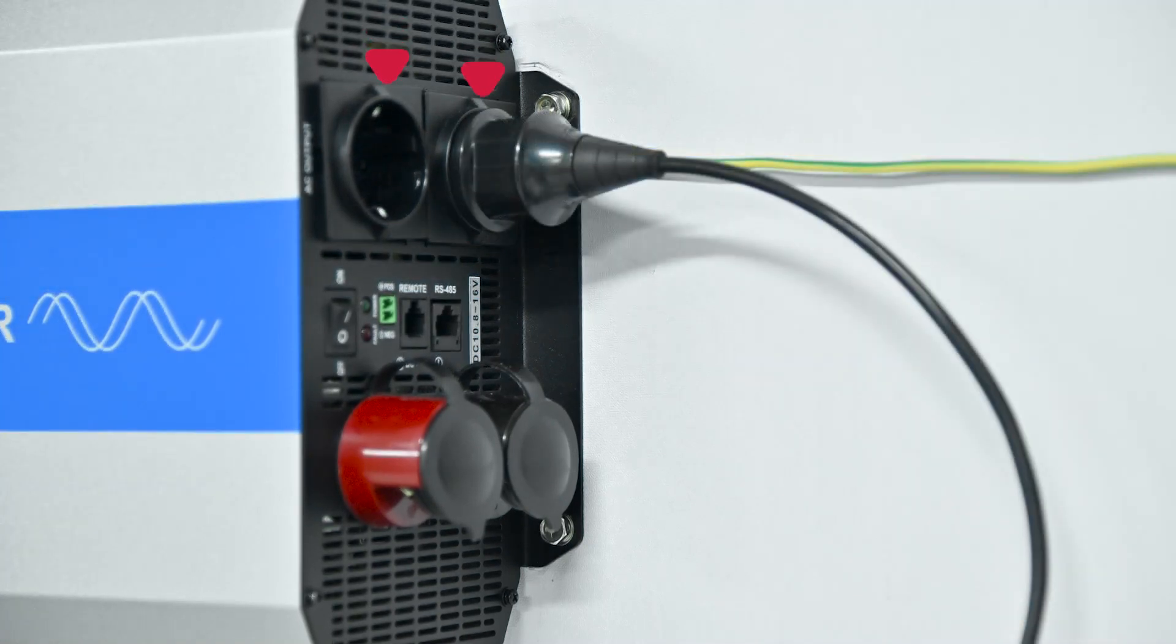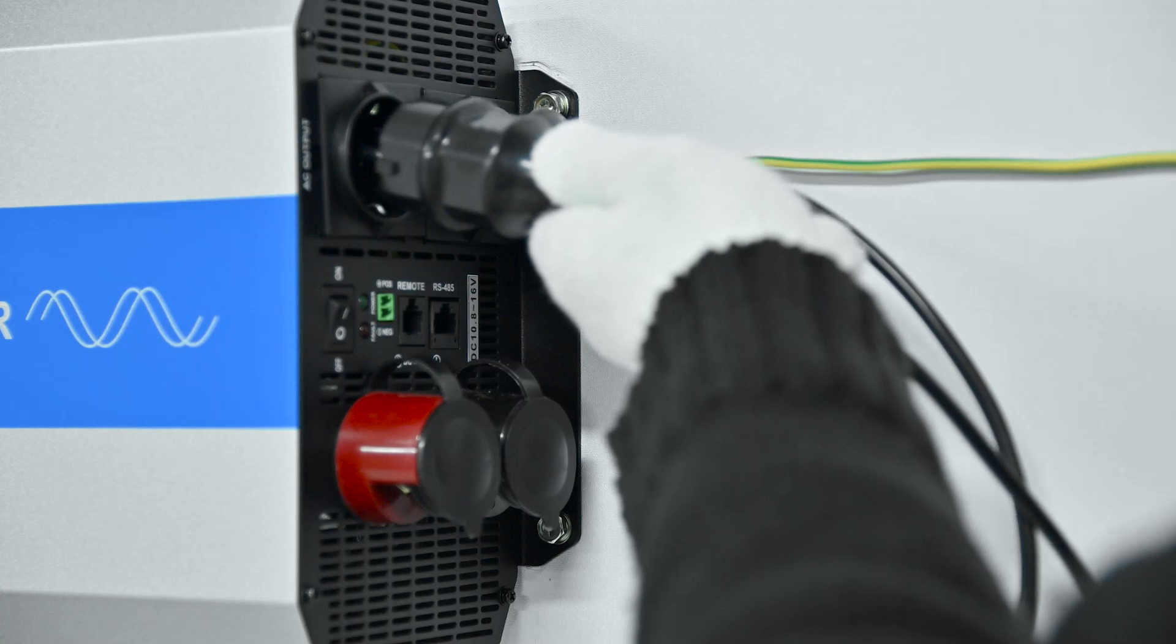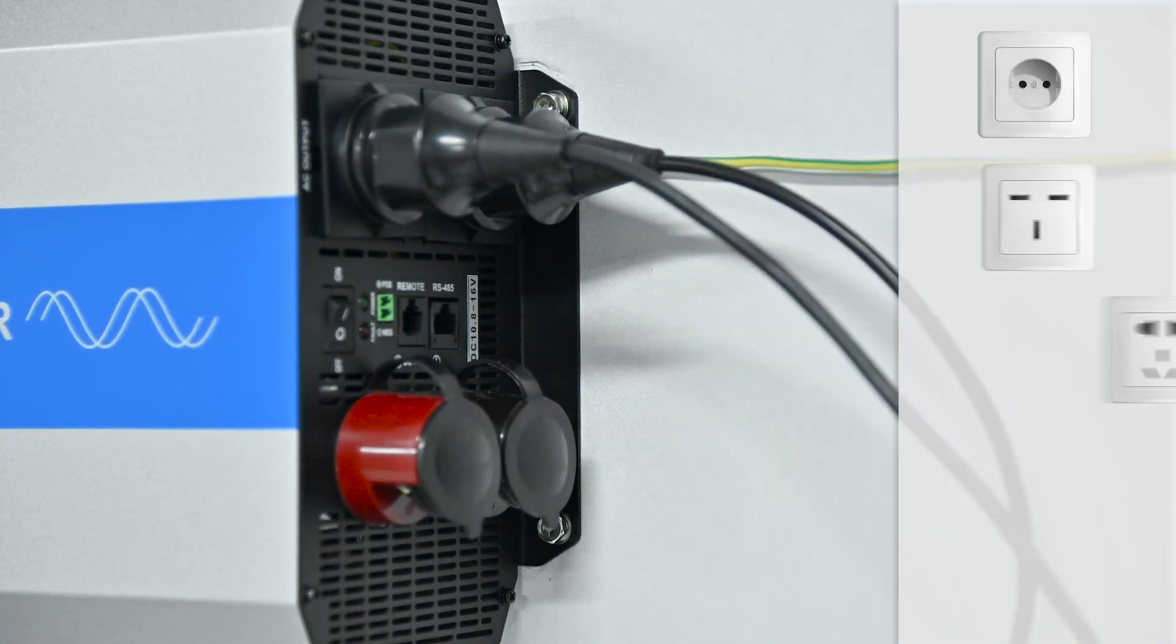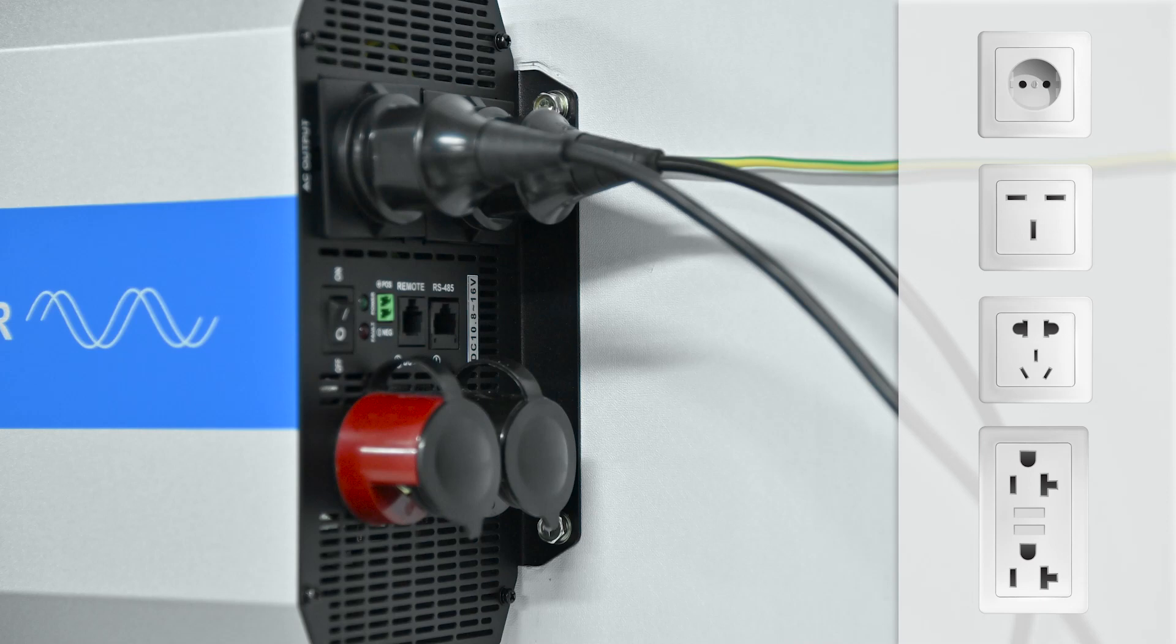These are European standard sockets which we simply plug into the output port of the inverter. The IPT3000 has two output ports, which can be freely customized according to the user and regional requirements.